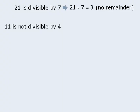For example, 11 is not divisible by 4. And notice that when we divide 11 by 4, we get 2 with remainder 3. In other words, 4 divides into 11 two times with remainder 3.